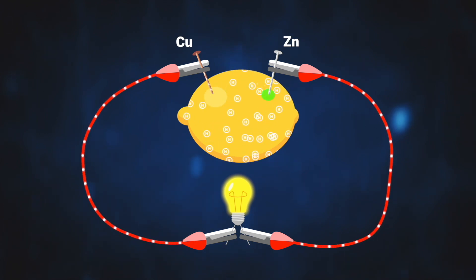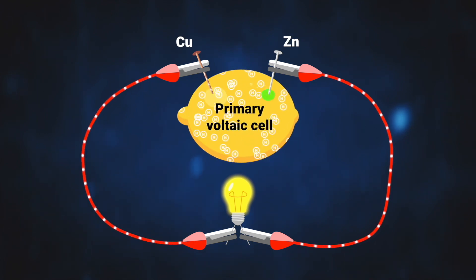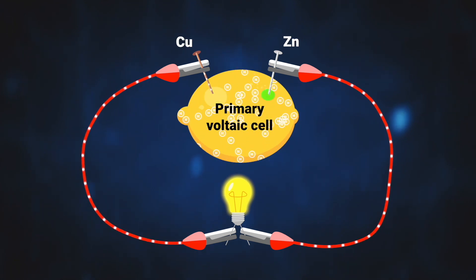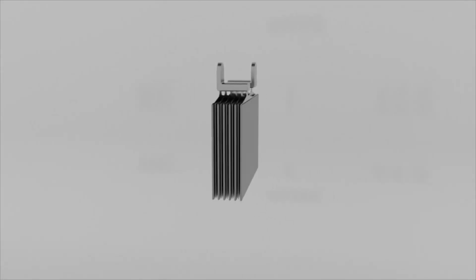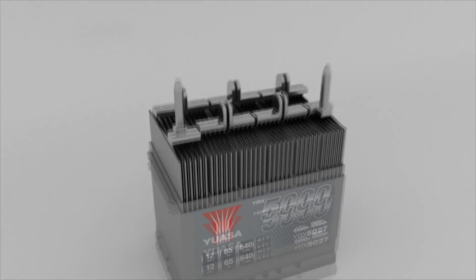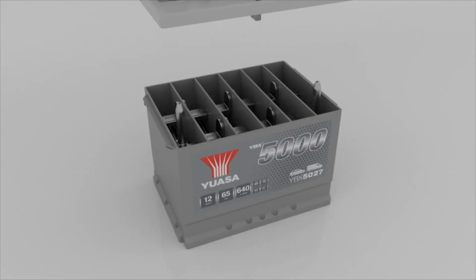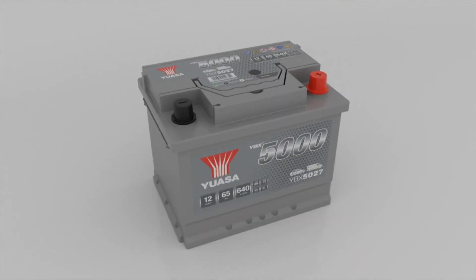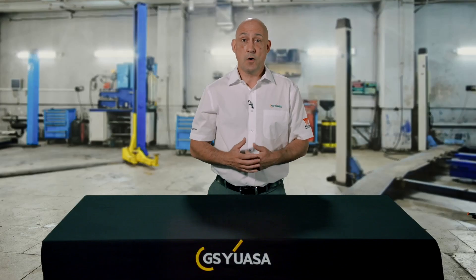This is known as a primary voltaic cell because it uses a chemical reaction to produce electrical energy but cannot be recharged. All GSU acid batteries are made up of lead acid voltaic cells arranged side by side that can produce a little over 2 volts. Thus, a 12 volt battery will consist of 6 cells.